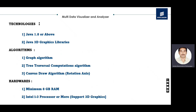For the technology stack: we are using Java — minimum Java 1.8 — along with Java 3D graphics libraries for the visualization technique. Graph algorithms are used for traversing and building the graphs, and three tree traversal computation algorithms are used for traversing different datasets, enabling root-to-leaf traversal. A canvas drawing algorithm is used for the visualizations.